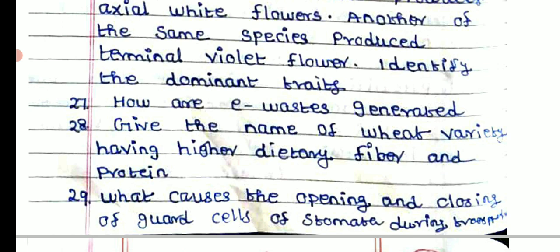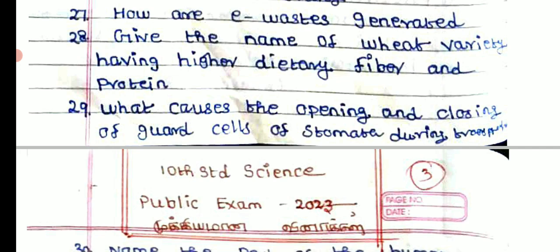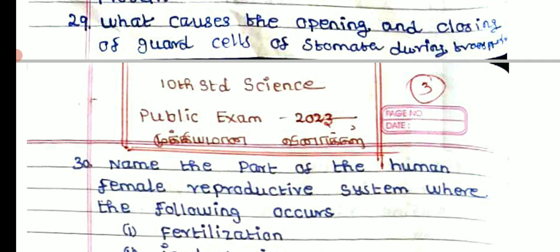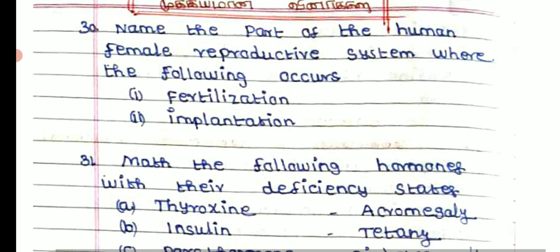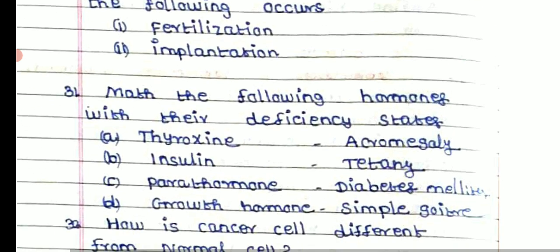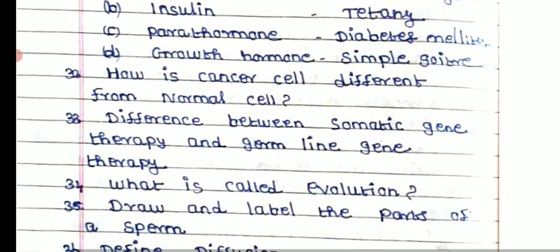How is e-waste generated? Give the name of wheat varieties having higher dietary fibers and protein. What is the cause of opening and closing of guard cells and stomata during transpiration? Name the parts of the human female reproductive system. Where does the following occur: fertilization, implantation?